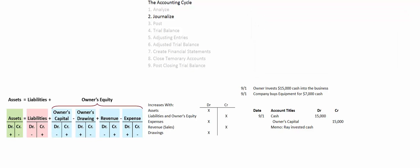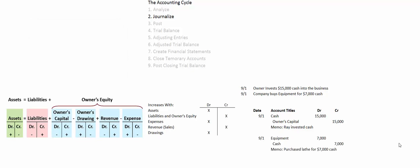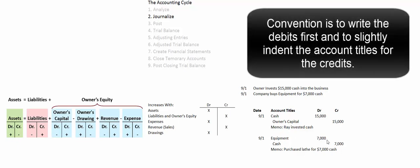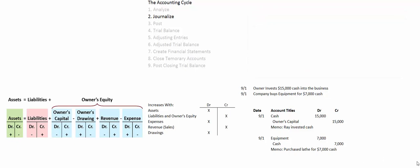Let's do another simple journal entry — one debit, one credit. The company buys equipment for $7,000 cash. Equipment is an asset, so it increases with debits. Cash is an asset, so it decreases with a credit. We debit equipment for $7,000 and credit cash for $7,000. Again, we use precise account titles — no phrases or sentences here. In the memo line we note that the company purchased a lathe for $7,000 cash.